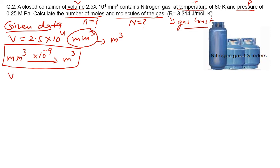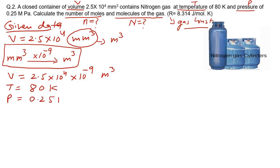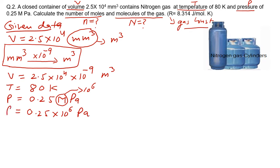So the volume in m³ is 2.5 × 10⁴ × 10⁻⁹. The temperature is 80 K — no conversion needed as kelvin is the standard unit. The pressure is 0.25 MPa, which must be changed to Pascal. Since mega = 10⁶, the pressure becomes 0.25 × 10⁶ Pascal.